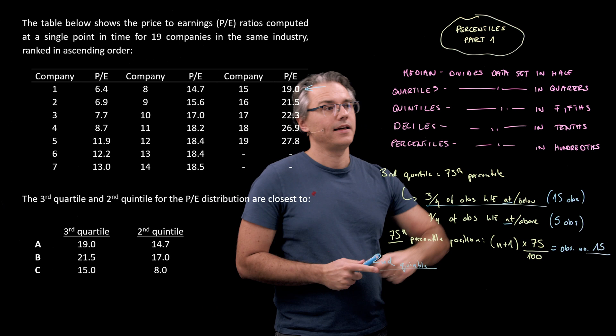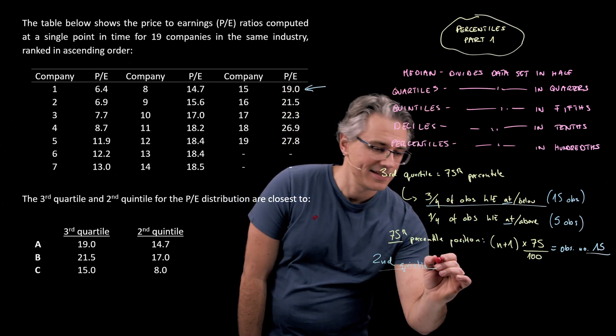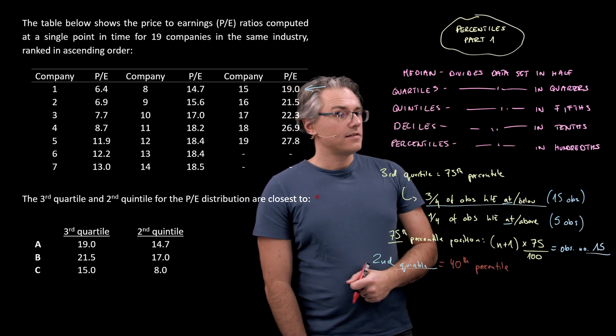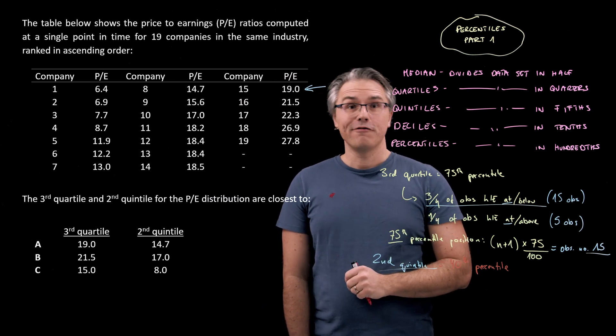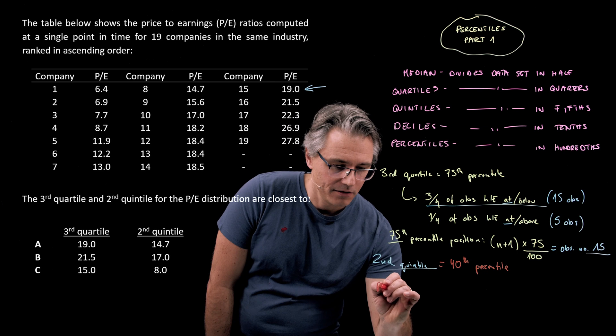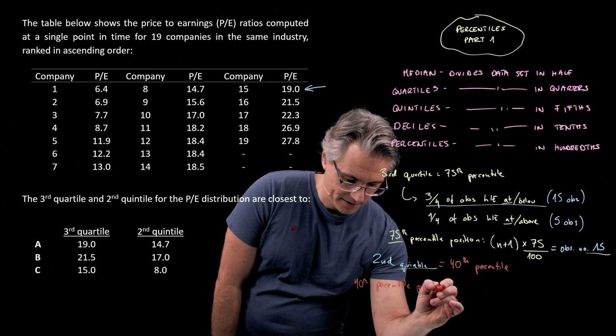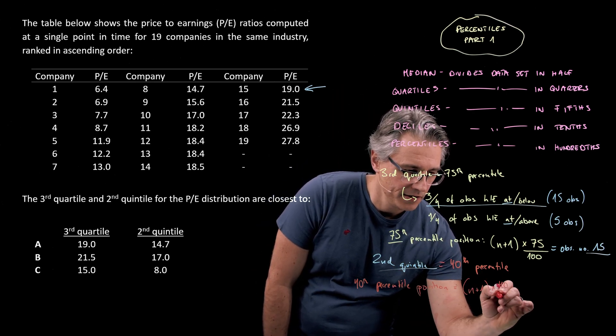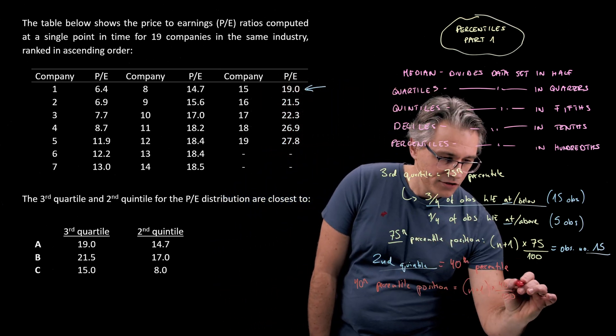That's the second quintile. Quintiles divide the distribution into fifths, so the second quintile is the same as the 40th percentile. That means four-tenths or two-fifths of the observations lie at or below, and the remaining three-fifths lie at or above. The 40th percentile position is simply going to be n plus 1 times 40 over 100. So once again, 20 times 4 over 10, and that is going to be observation number 8.